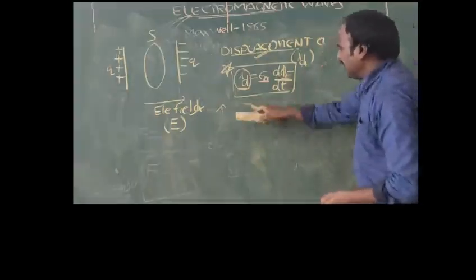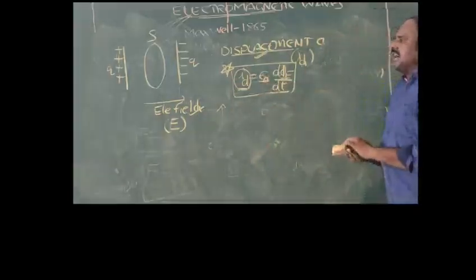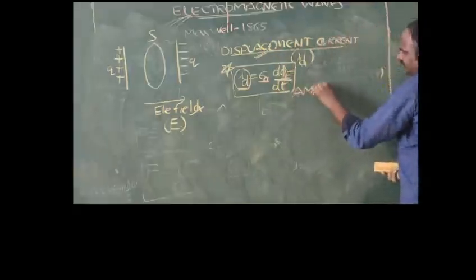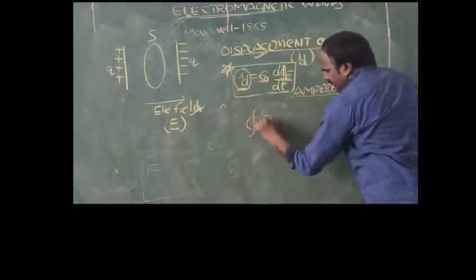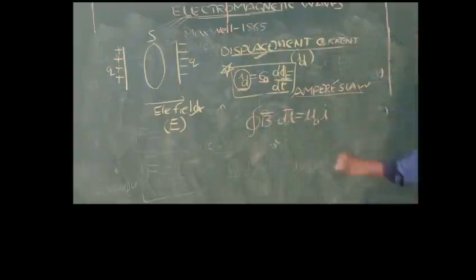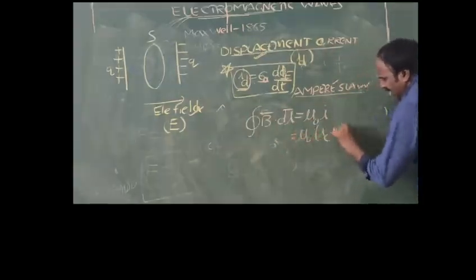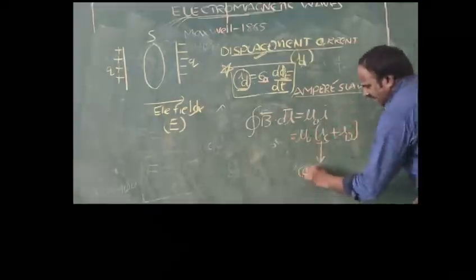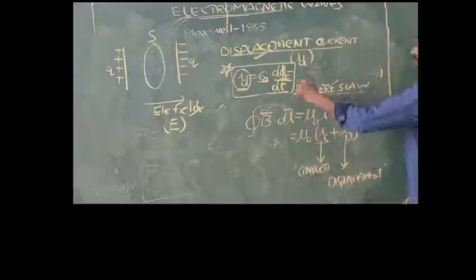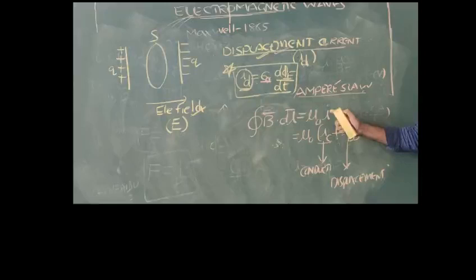Using the concept of displacement current, we get the equation for current produced due to a changing electric field. The main purpose of introducing displacement current is to modify Ampere's law. Ampere's law is: ∮ B⃗·dl⃗ = μ₀I. Instead of just I (conduction current), we write it as I_C + I_D, where I_C is conduction current and I_D is displacement current. This gives the modified Ampere's law.